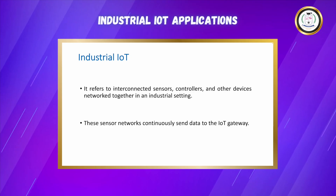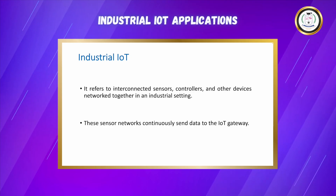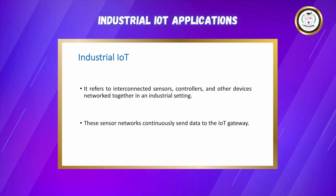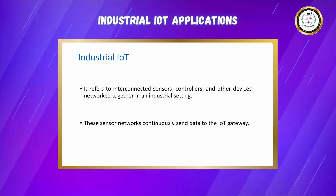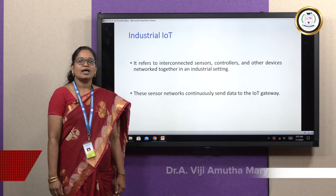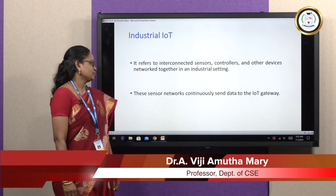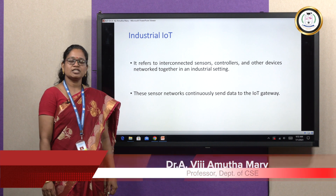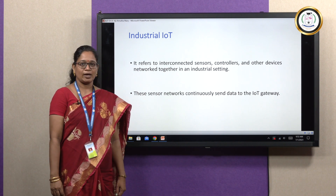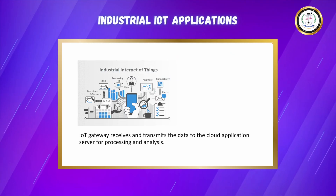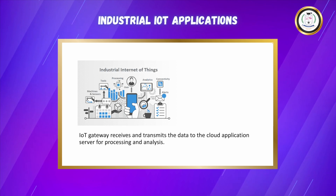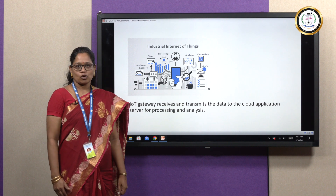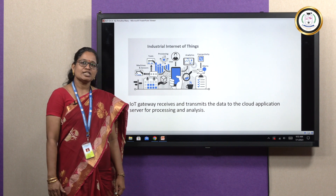What is this Industrial IoT? It refers to interconnected sensors, actuators, controllers and other devices which are internet-connected in an industrial setting. These sensor networks continuously send data to an IoT gateway, and this gateway in turn receives and transmits the data to the cloud application server for further processing and data analysis.